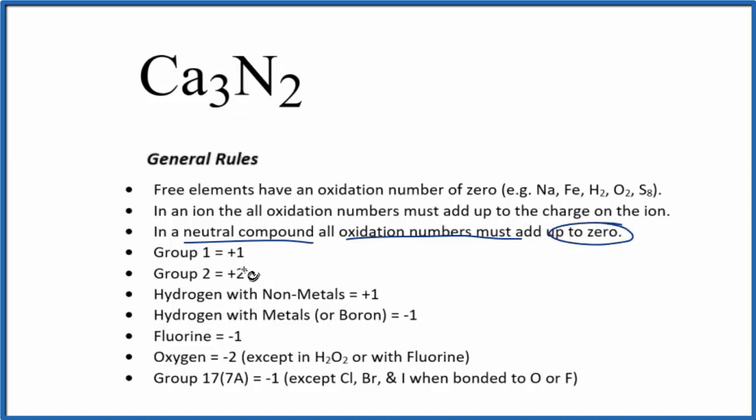Calcium is in group 2 on the periodic table. Because it's in group 2, it'll have a +2 oxidation number.